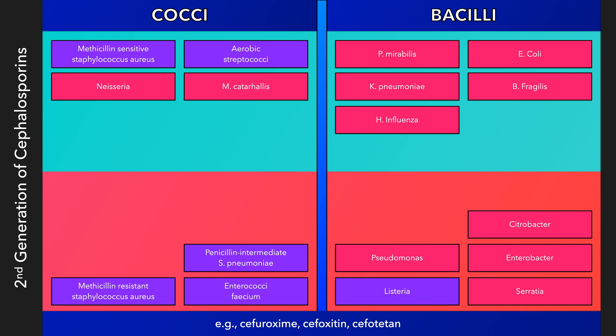The second generation of cephalosporins is more heterogeneous in its antimicrobial spectrum of activity than the other generations and is divided into two subgroups: the true cephalosporins, including cefuroxime, and the cephamycins, including cefotetan and cefoxitin. Both subgroups provide coverage against gram-negative cocci, including Neisseria and Moraxella, and are more effective than the first-generation cephalosporins against E. coli, Klebsiella pneumoniae, and Proteus mirabilis. Cefuroxime is a true cephalosporin that maintains the first generation's activity against aerobic gram-positive cocci while providing coverage against Haemophilus influenzae.